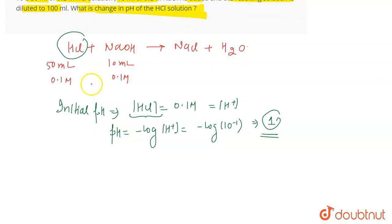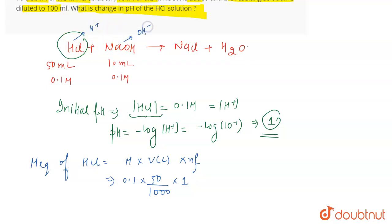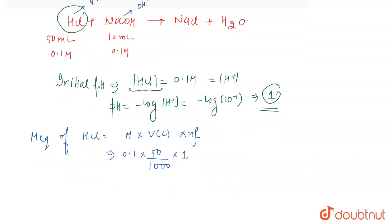Now, after the reaction, we calculate the milliequivalents. The milliequivalents of HCl = molarity × volume in liters × N factor. The molarity of HCl is 0.1 M, the volume is 50/1000 liters, and the N factor is 1 since HCl gives 1 H⁺ ion. So the milliequivalents of HCl come out to be 5 × 10⁻³.